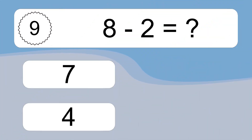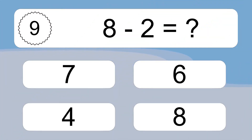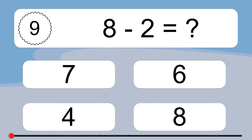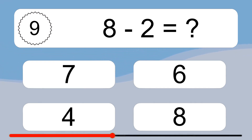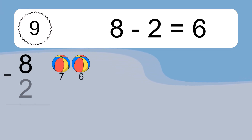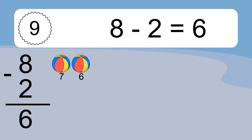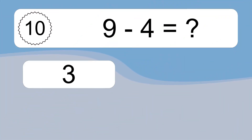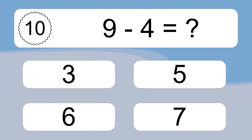8 minus 2 equals what? 8 minus 2 equals 6. Let's count it: 7, 6.